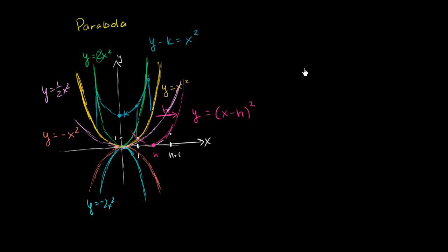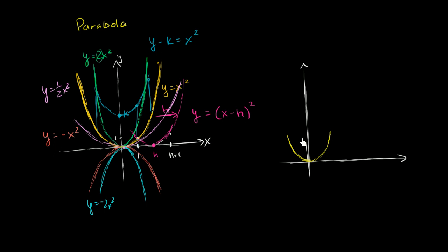For example, if this is y equals x squared, the graph of y minus k equals a times x minus h squared will have its vertex shifted from (0, 0) to (h, k) — shifted h to the right and k up. The extreme point — minimum for upward-opening, maximum for downward-opening — is that shifted vertex, and the parabola is scaled by a.